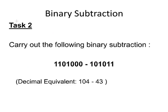Let's look at another example. Carry out the following binary subtraction: 1101000 minus 101011. The decimal equivalent is 104 minus 43.